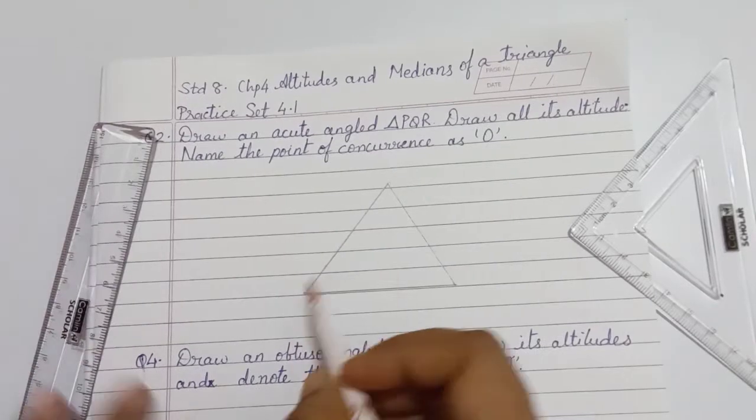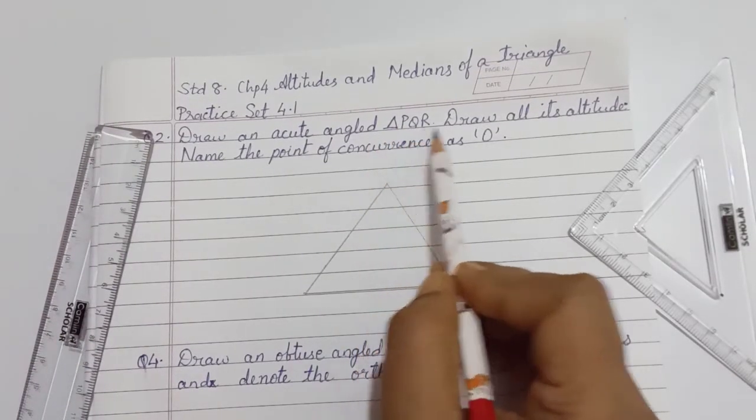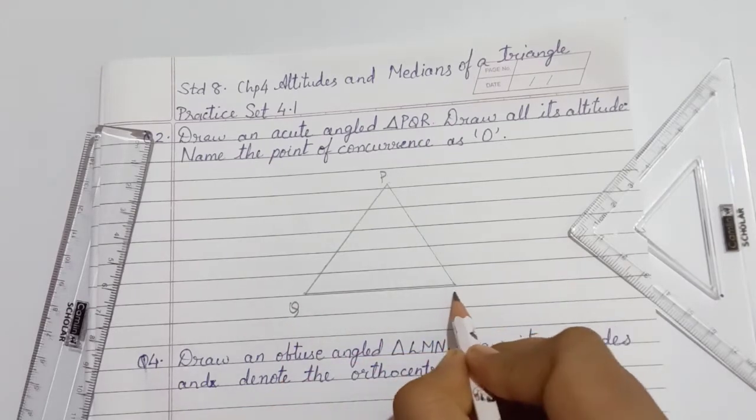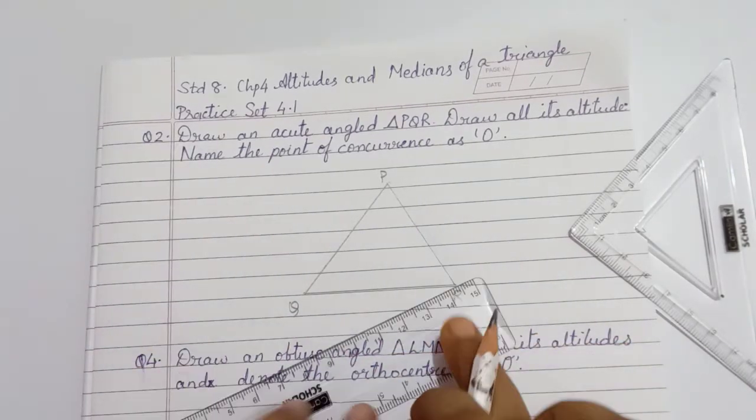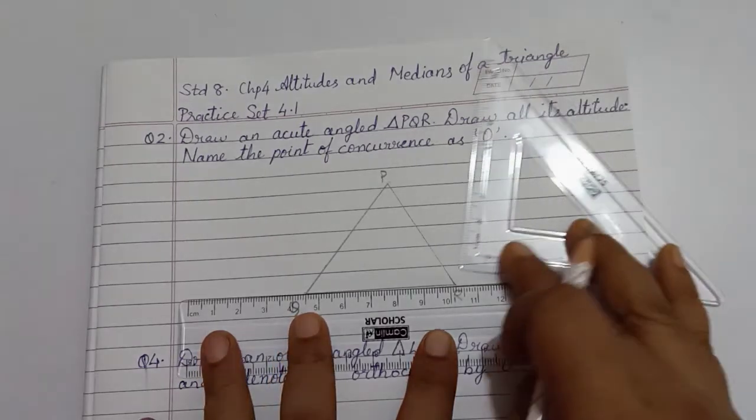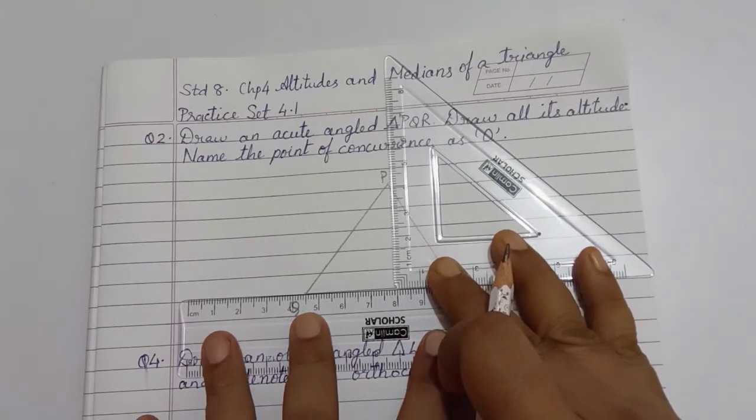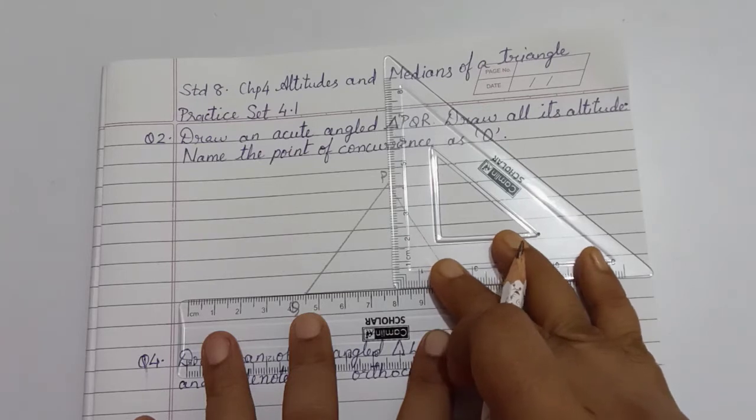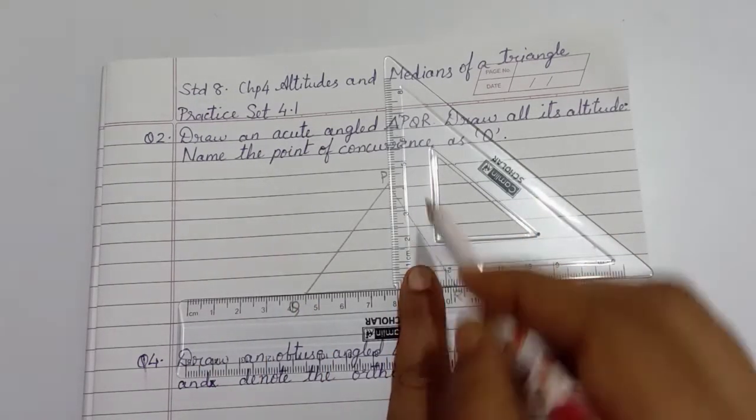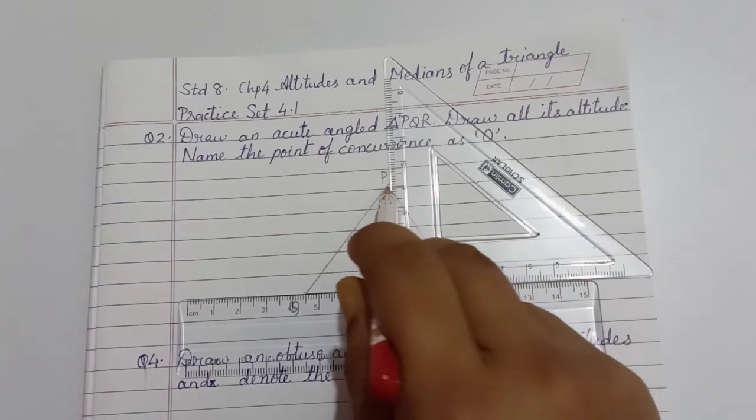Label it as PQR. Align the scale to the base of the triangle. Slide the set square close to point P.